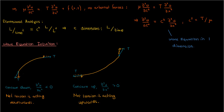What does this mean? It means that when we have a concave up string, the net tension is going to be acting upwards. So now we know what the second partial of u with respect to x is related to: it's related to the net tension force, because the second partial with respect to x is the concavity of the string, and we just showed that the concavity dictates the net direction of the tension force.